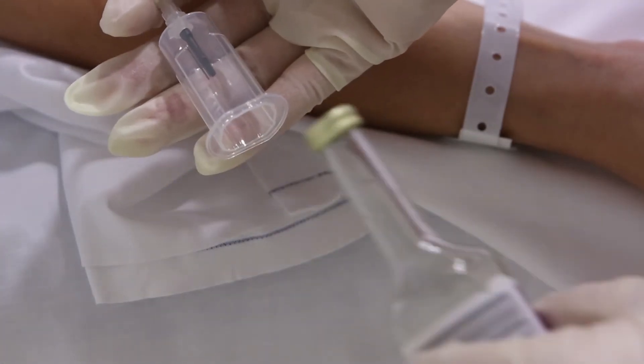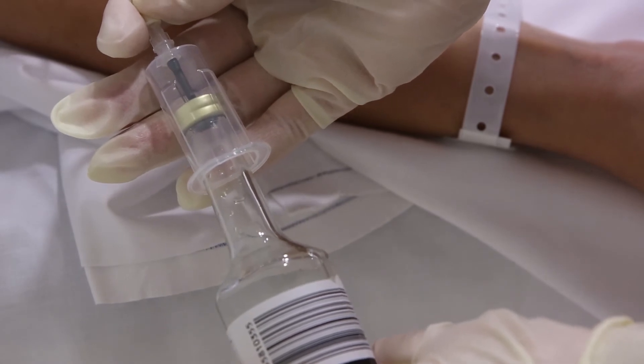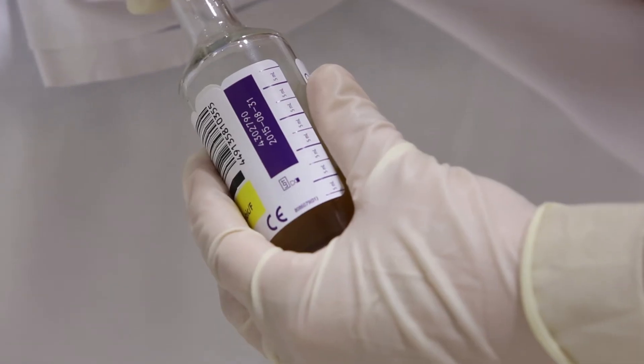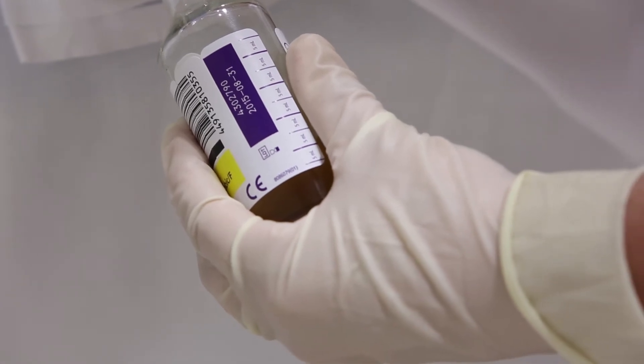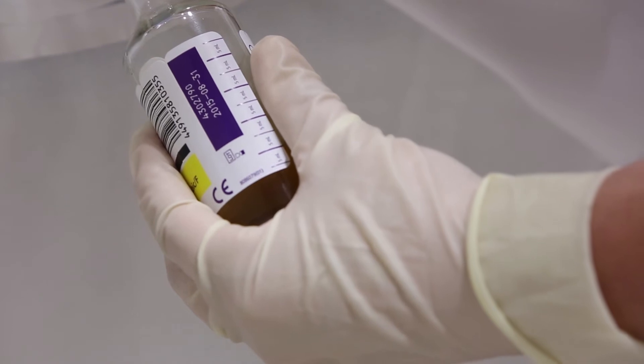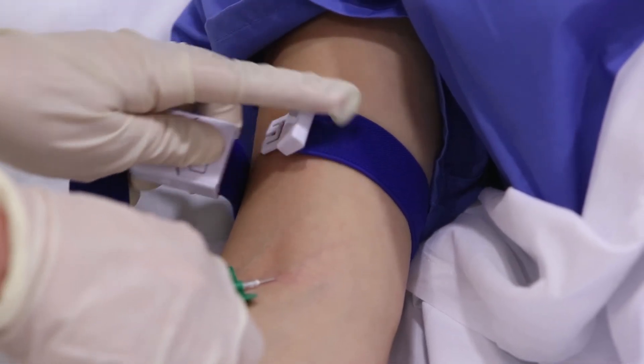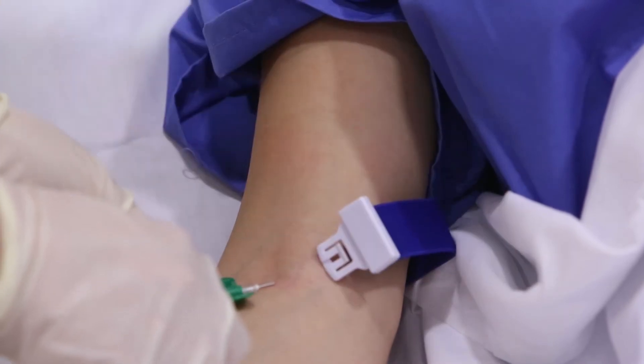The blood culture volume to be aspirated into each bottle is crucial for the detection of bacteremia and will vary according to the type of blood culture bottle being used. Further information on the required volumes can be found in the infection control blood culture policy on the hospital intranet. Proceed to fill any other bottles or tubes as needed and release the tourniquet.